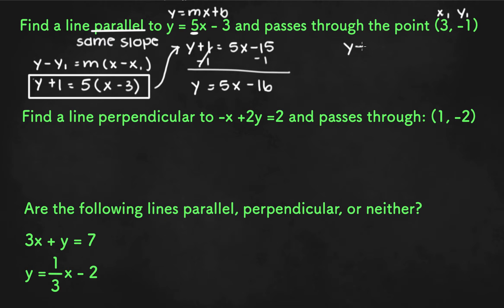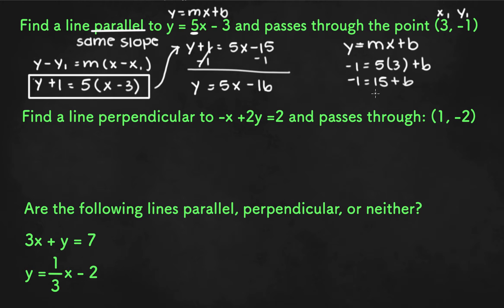Or we could start with y equals mx plus b and plug in all the values we know. We know m is 5, and that y equals negative 1 when x equals 3, and we can find b. That gives us negative 1 equals 15 plus b, so b equals negative 16. When you put 5 for m and negative 16 for b, you get y equals 5x minus 16, which is exactly the same result.